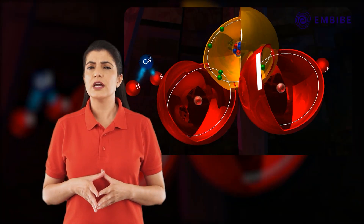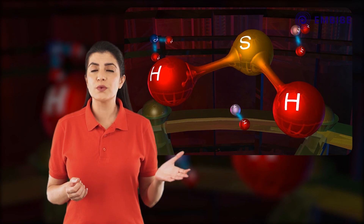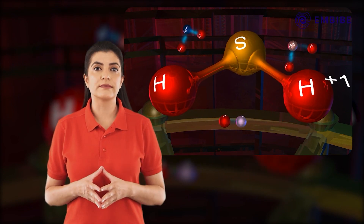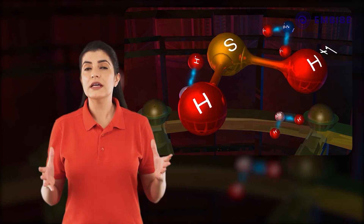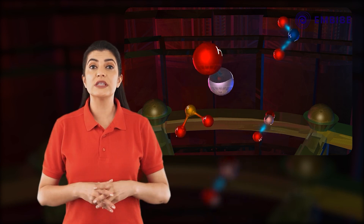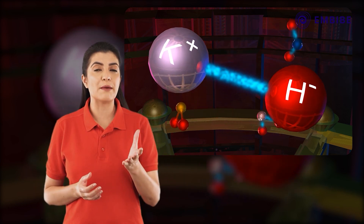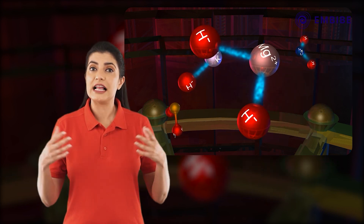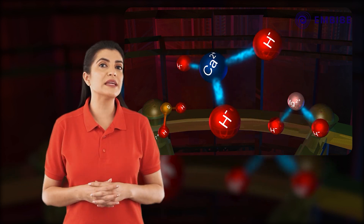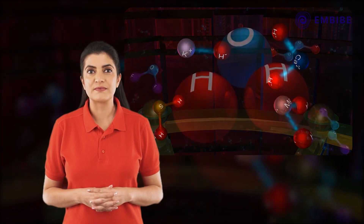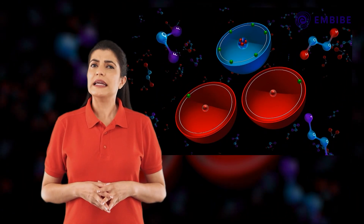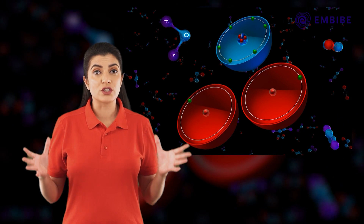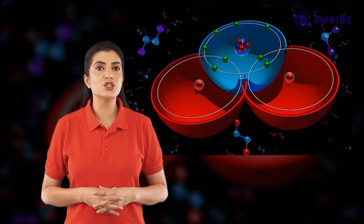Rule three: in most compounds of hydrogen, the oxidation number of hydrogen is +1. For example, the oxidation number of hydrogen in an H₂S molecule is +1. But as an exception, the oxidation number of hydrogen in metallic hydrides — for example, potassium hydride, magnesium hydride, and calcium hydride — is considered to be −1.